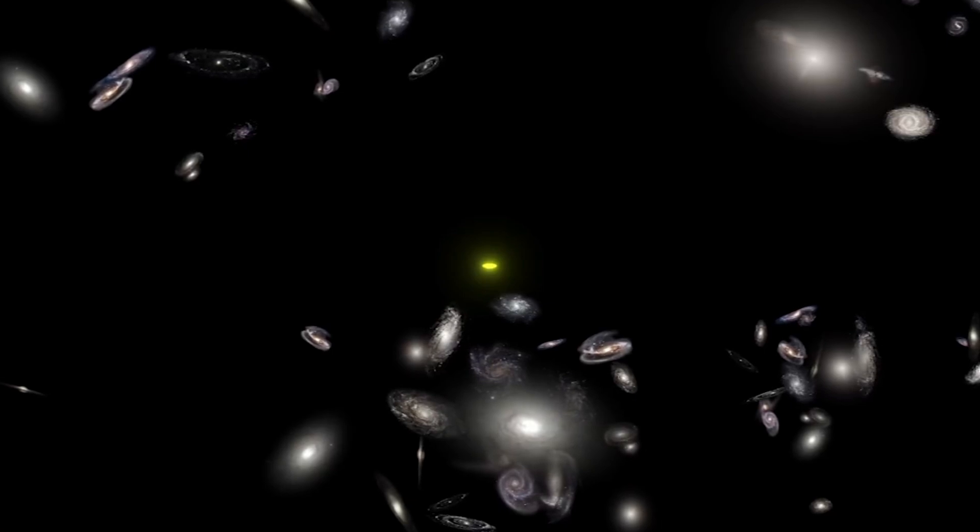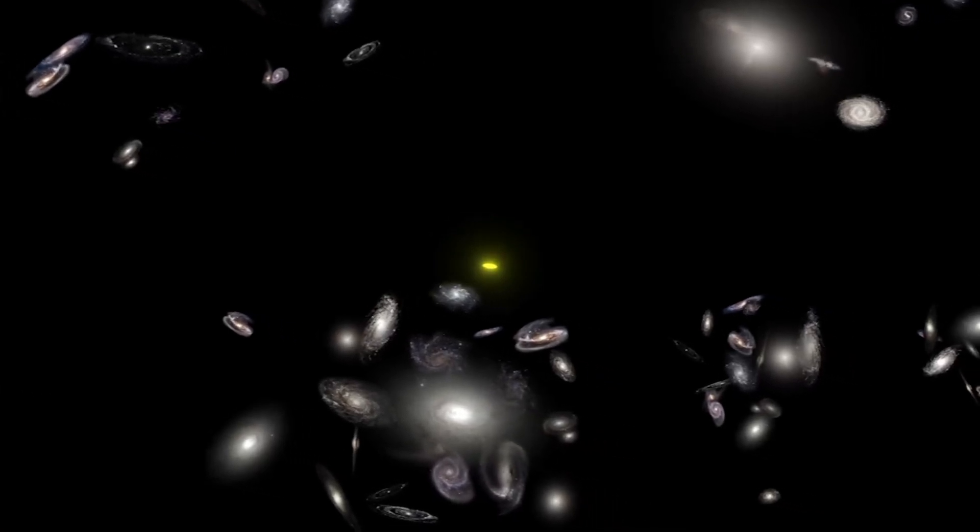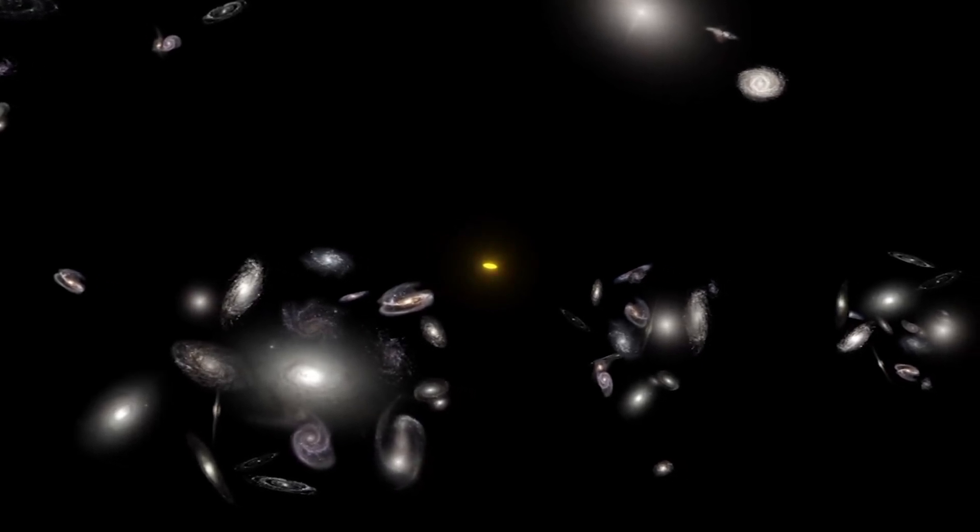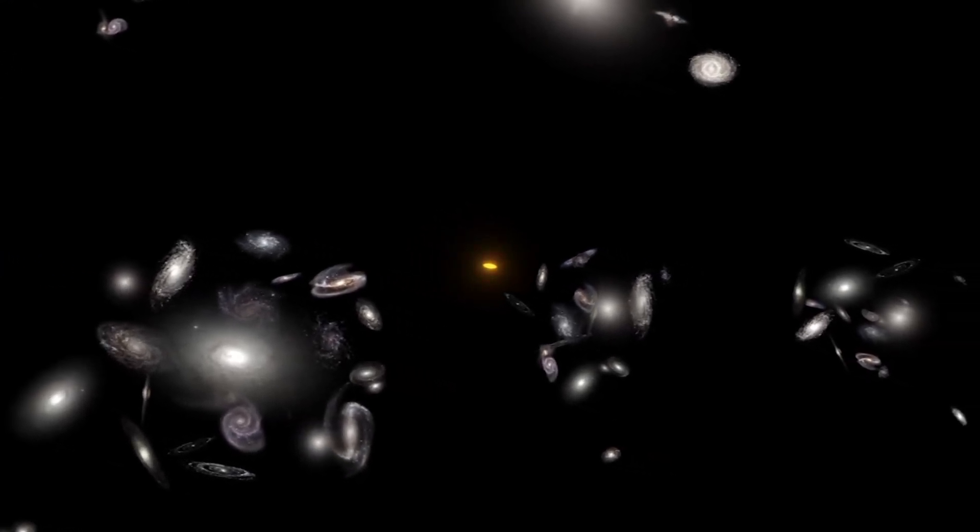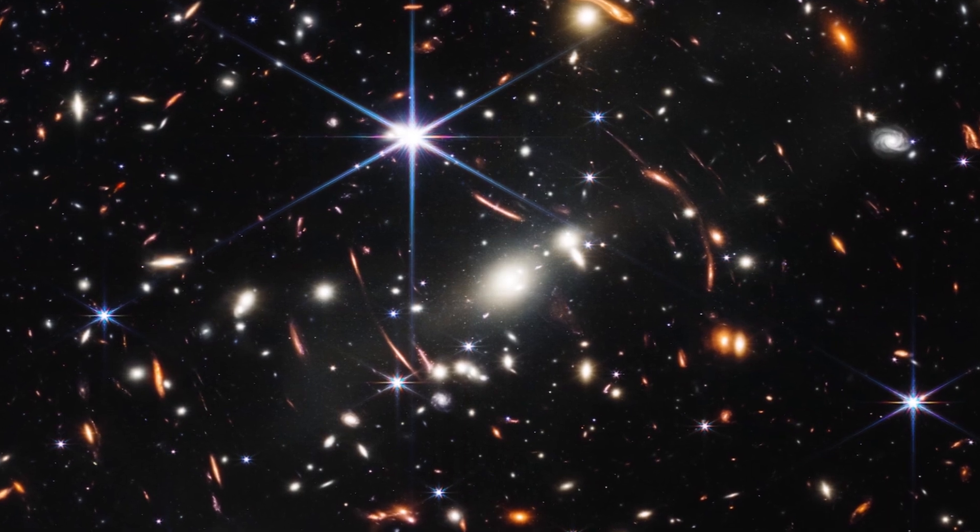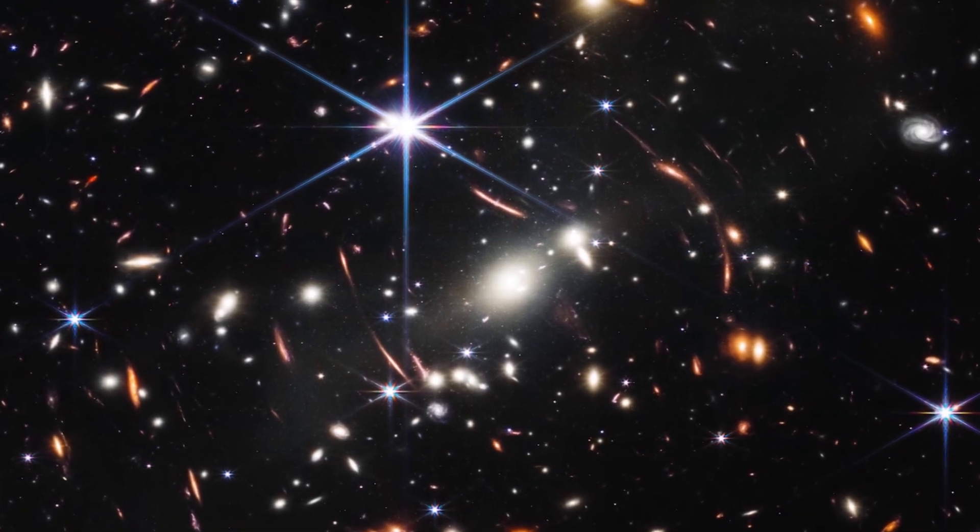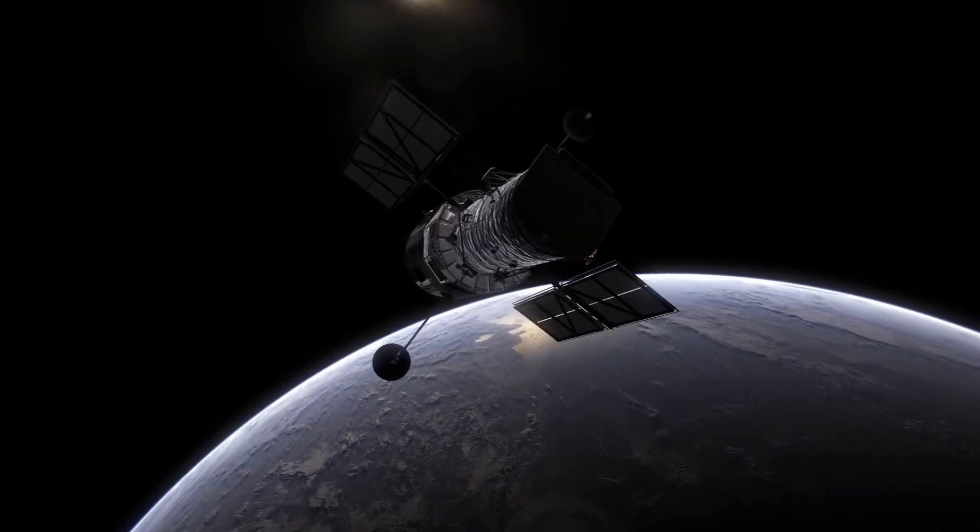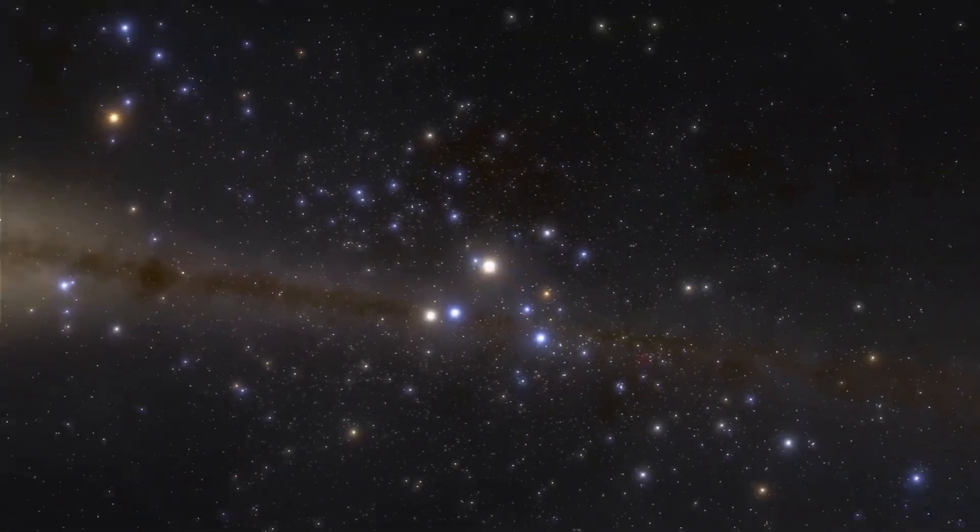The galaxies captured in these images appear to be too small, smooth, old, and numerous compared to the predictions of the Big Bang Hypothesis. The fact that the observed galaxies are two to three times smaller than similar galaxies imaged by the Hubble Space Telescope completely defies the expected behavior in an expanding universe.